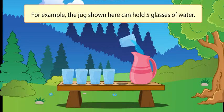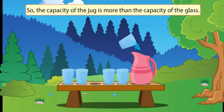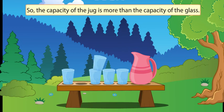For example, the jug shown here can hold 5 glasses of water. So the capacity of the jug is more than the capacity of the glass.